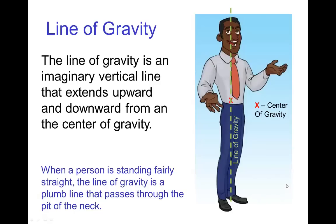Line of gravity. So the line of gravity is an imaginary vertical line that extends up and down from the center of gravity. This is perhaps also known as a plumb line.